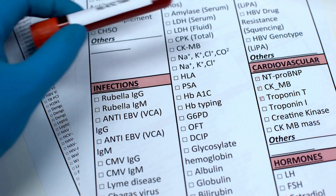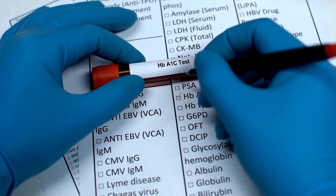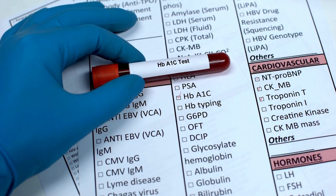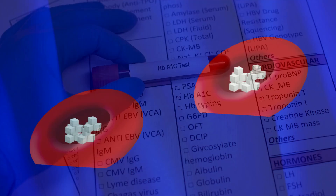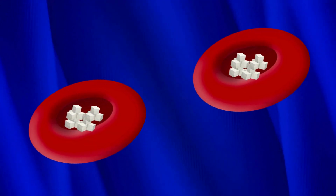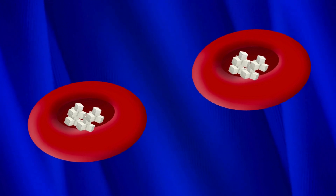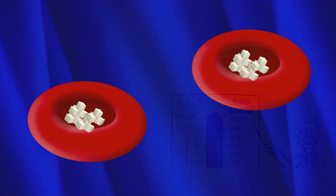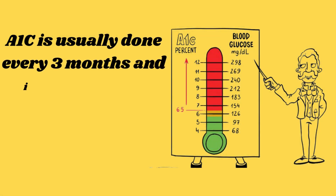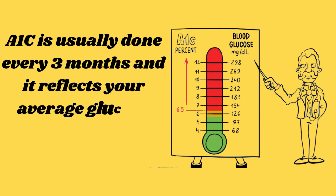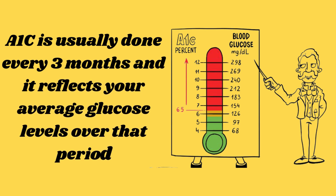You may have heard of A1c, which is a blood test that shows how much glucose is attached to your red blood cells. A1c is usually done every three months and it reflects your average glucose levels over that period.